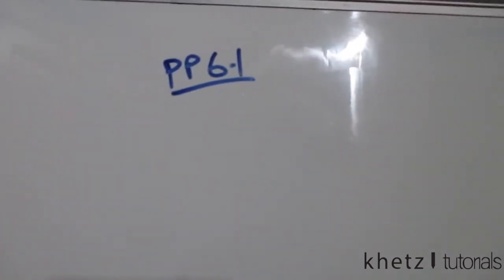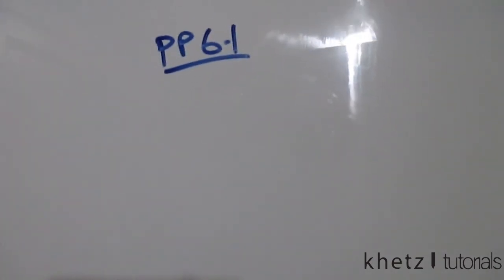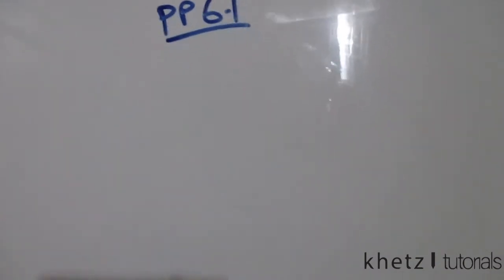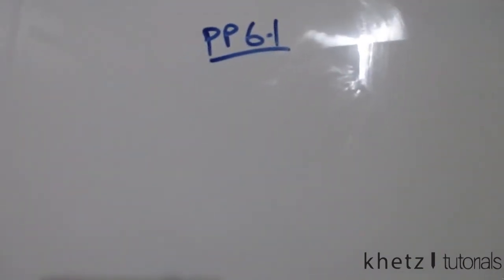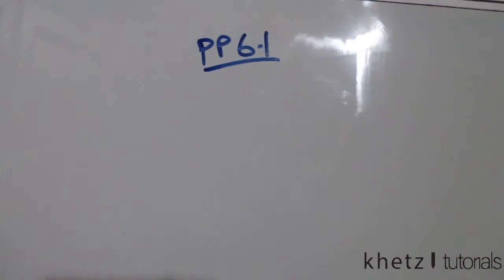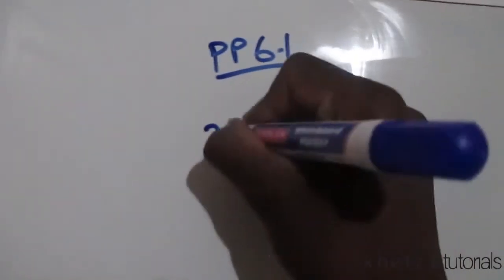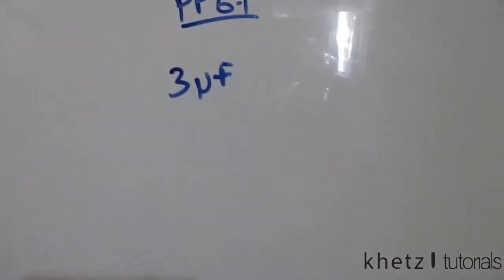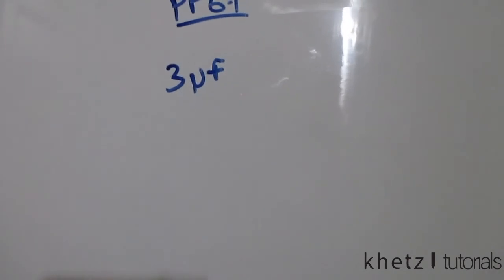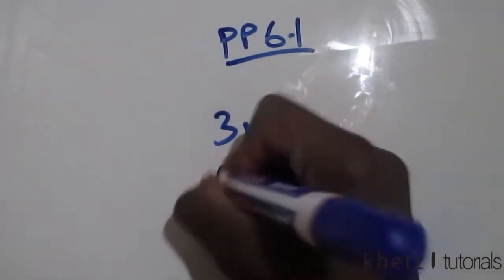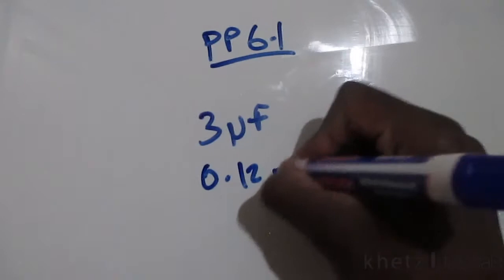Welcome to Khetz Tutorials. In this video I'll be covering practice problem 6.1. The question says: What is the voltage across a 3 microfarad capacitor if the charge on one plate is 0.12 milliCoulombs?